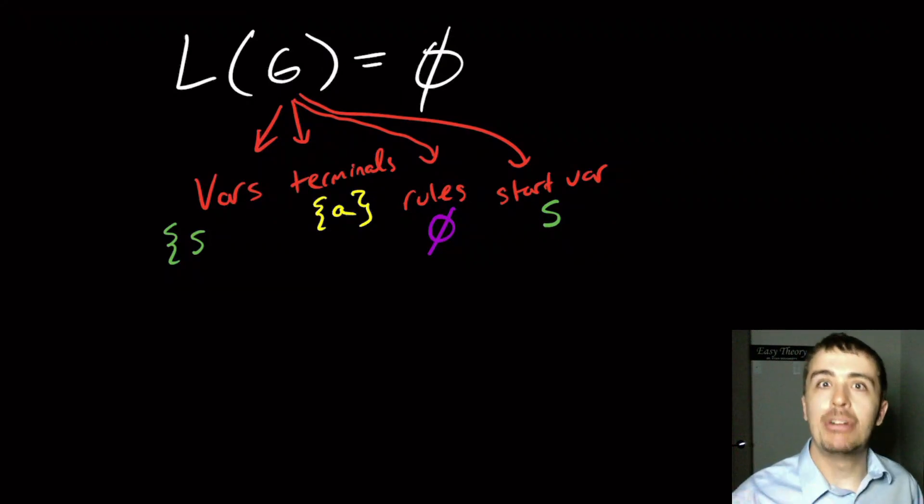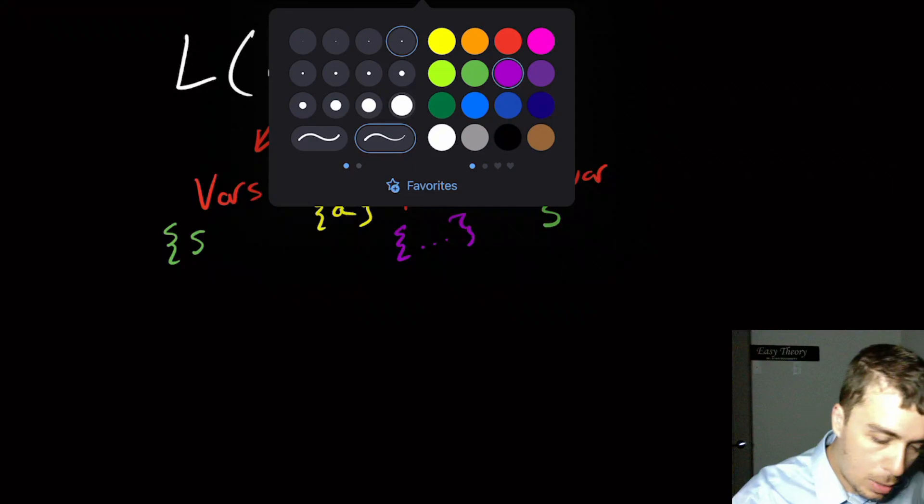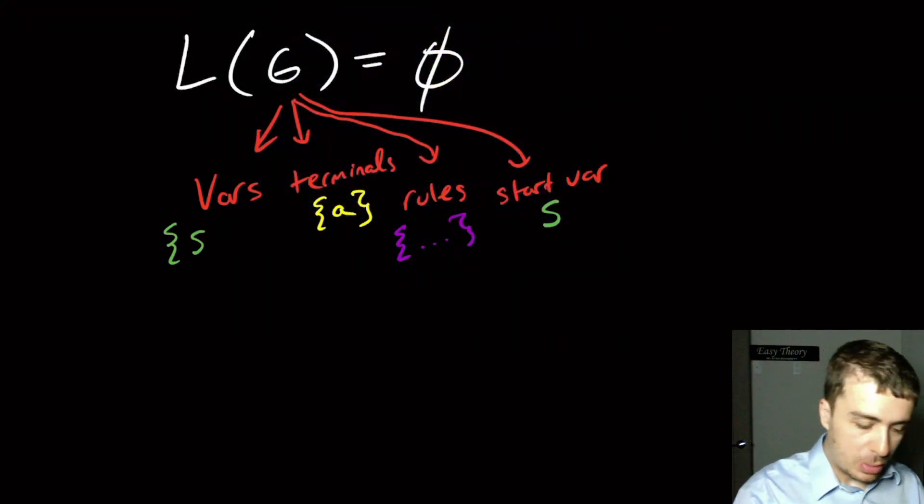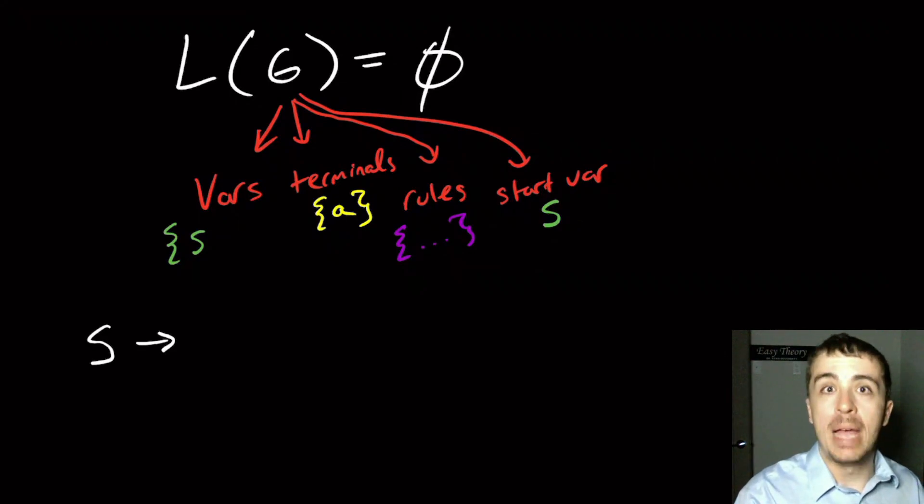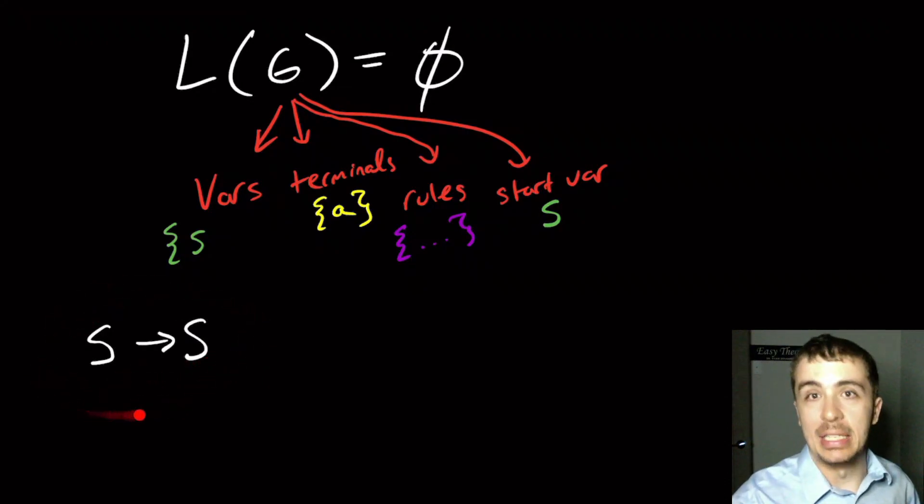But let's suppose that you must have some rule in the grammar. So let's say that we must have something in here. So what would we actually put there? Well, one thing that you can do, which is really easy to get the empty language, is just have S be replaced with S.